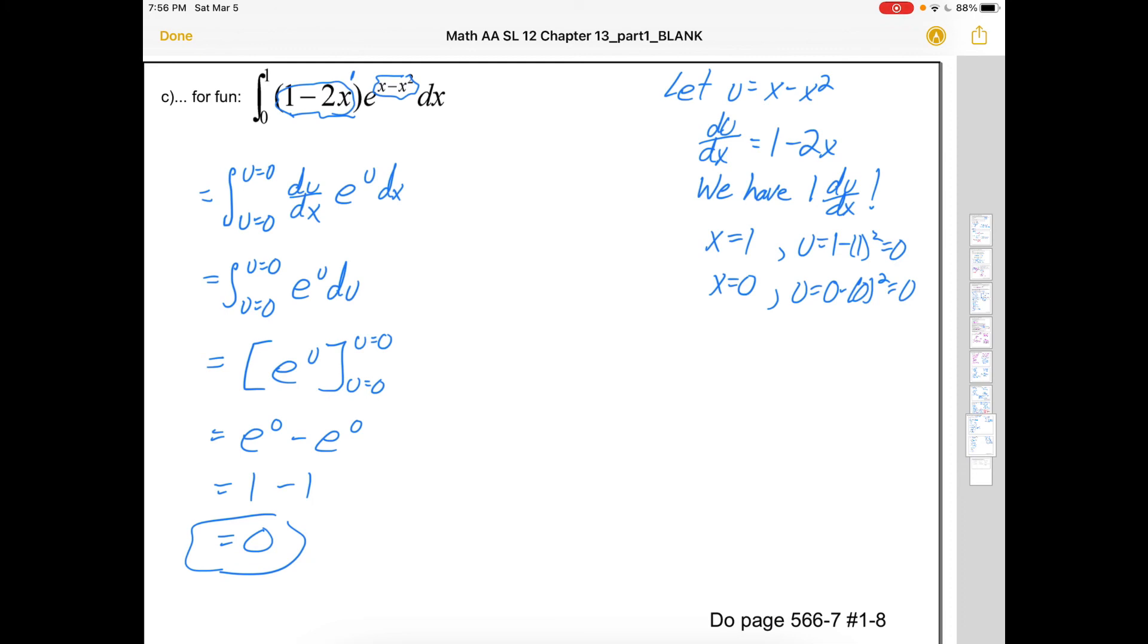Alright. How did we know it was going to work out to be 0 before? We knew it right at this stage. If the boundaries are the same, then there's no width. So there can be no area or net area. So knowing that u equals 0 is both the lower and the upper boundary guarantees us that we're going to have an integral of 0.